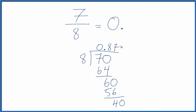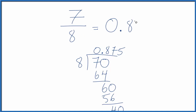Call that 40. Five times eight gives us 40, and we're done. So this is the decimal. Seven divided by eight is 0.875. And that means the fraction seven eighths, when we express that as a decimal, that's 0.875.